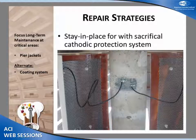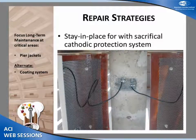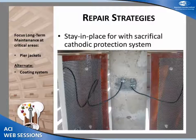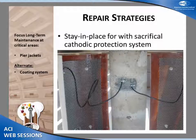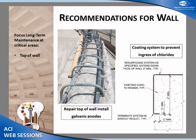For the piers, we decided to go with a stay-in-place sacrificial cathodic protection jacket. This jacket has a fiberglass shell with a zinc mesh embedded into it. We repaired visible cracks or corrosion, then did partial depth repair of corroded reinforcement as required and used the embedded zinc mesh to provide future galvanic protection for the reinforcement. We also had an alternate coating system option, but the coating alone would only limit chloride and available oxygen without providing galvanic protection. We felt the cathodic protection jacket was the best system to achieve 30-year service life.